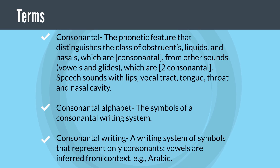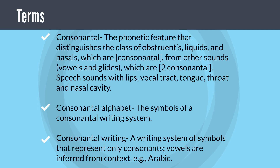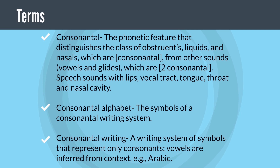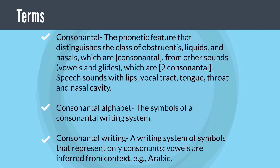Speech sounds are produced with the lips, vocal tract, tongue, throat, and nasal cavity. Consonantal alphabet: the symbols of a consonantal writing system. Consonantal writing: a writing system of symbols that represent only consonants; vowels are inferred from context. Example: Arabic.